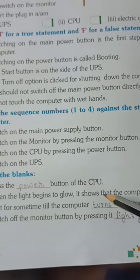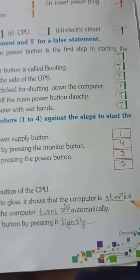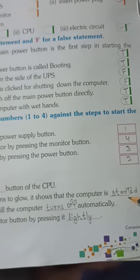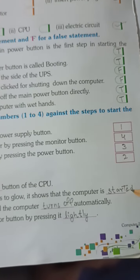Number B, when the light begins to glow, it shows that the computer is dashed. When the light begins to glow, it shows that the computer is started. S-T-A-R-T-E-D, started.